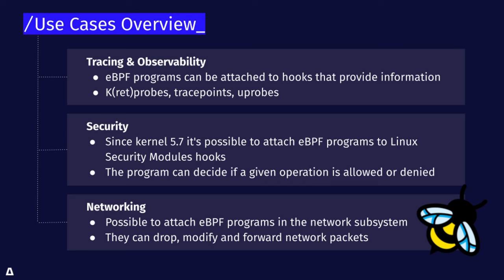The final use case to cover here is networking. BPF programs can attach to different places in the network subsystem, including all the way into the hardware. XDP is a functionality that allows you to basically do hardware routing using eBPF programs, which is very powerful and very performant. Companies like Facebook use eBPF for their load balancing with great results. It basically allows you to modify and forward network packets. In the Kubernetes space, the most popular example is Cilium, which uses eBPF extensively for its network functionality.